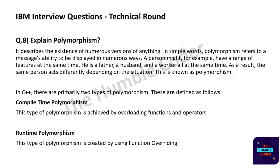In C++, there are primarily two types of polymorphism: compile-time polymorphism, which is achieved by overloading functions and operators; and runtime polymorphism, which is created by using function overriding.